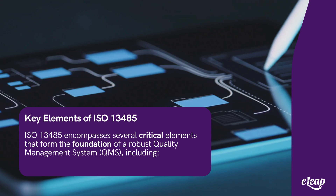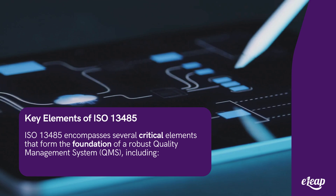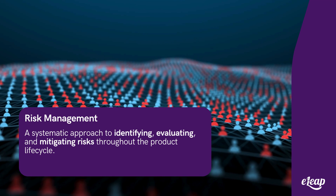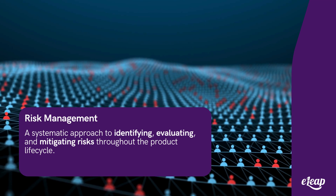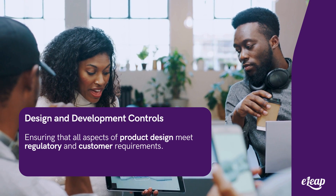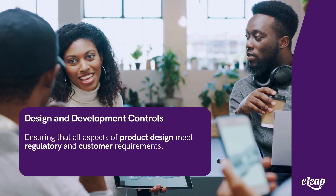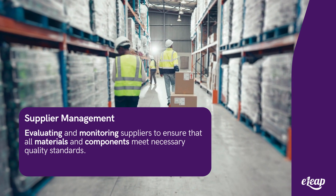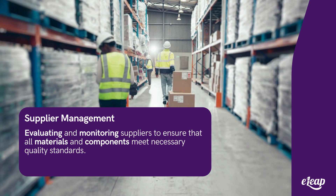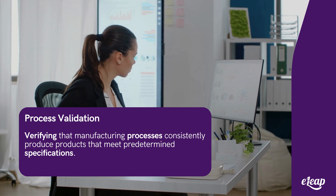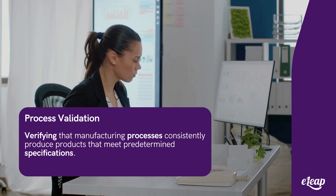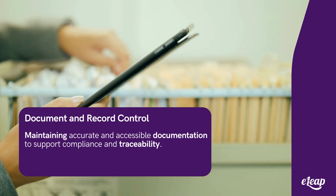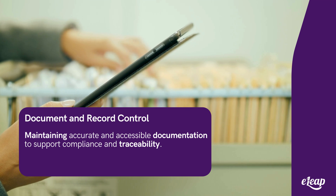ISO 13485 encompasses several critical elements that form the foundation of a robust QMS, including risk management — a systematic approach to identifying, evaluating, and mitigating risks throughout the product lifecycle. Design and development controls ensure that all aspects of product design meet regulatory and customer requirements. Supplier management involves evaluating and monitoring suppliers to ensure all materials and components meet necessary quality standards. Process validation verifies that manufacturing processes consistently produce products that meet predetermined specifications. Document and record control maintains accurate and accessible documentation to support compliance and traceability.